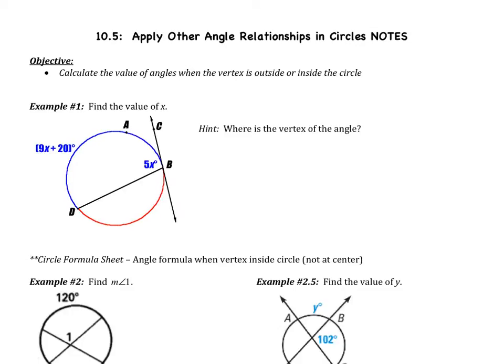Welcome ladies and gentlemen to the fifth video of chapter 10, which is applying other angle relationships in circles. We have one objective: we're going to calculate the values of angles when the vertex is outside or inside the circle. So far we've calculated central angles and inscribed angles. We're going to learn two other formulas today.